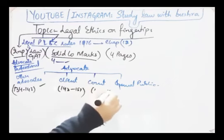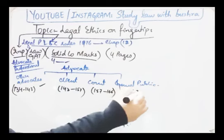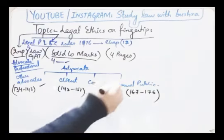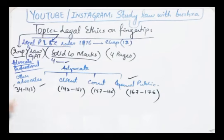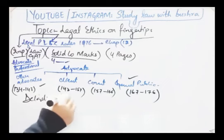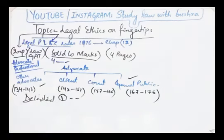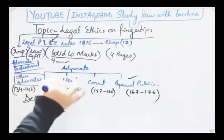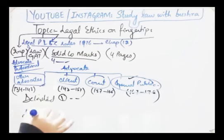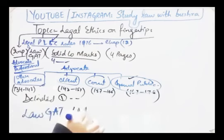Other advocates ke saath rules discuss hue hain Rule 134 se Rule 143 tak. Phir clients ke liye Rule 145 se 157-158 tak. Courts ke liye Rule 159 se 166 tak. Aur last mein Rule 167 se 176 tak ye rules discuss hue hain. Hum already in par detail lectures upload kar chuke hain jisme humne separate videos ke andar in separate categories ko discuss kiya tha.